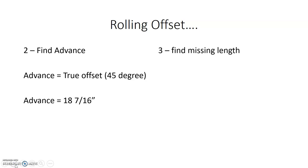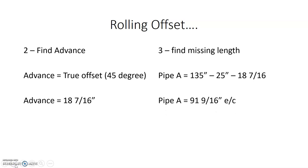Finally, we find the missing pipe length, pipe A. We take the overall dimension of 135 inches, subtract 25 inches to reach the first 45-degree elbow, then subtract the advance of 18 and 7/16 inches. That gives us pipe A at 91 and 9/16 inches to center.